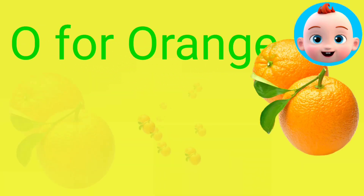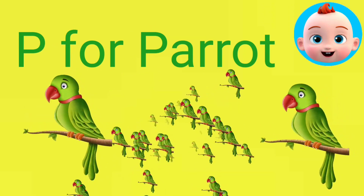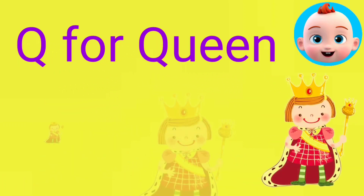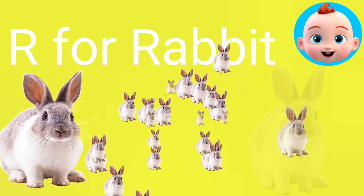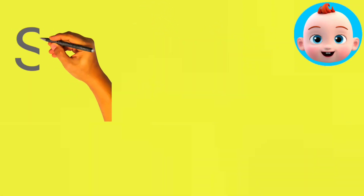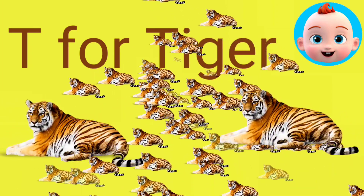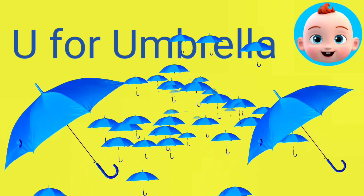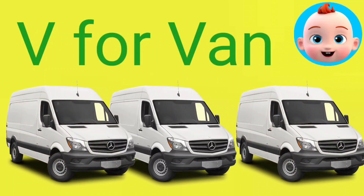O for orange. P for parrot. Q for queen. R for rabbit. S for shape. T for tiger. U for umbrella. V for van.